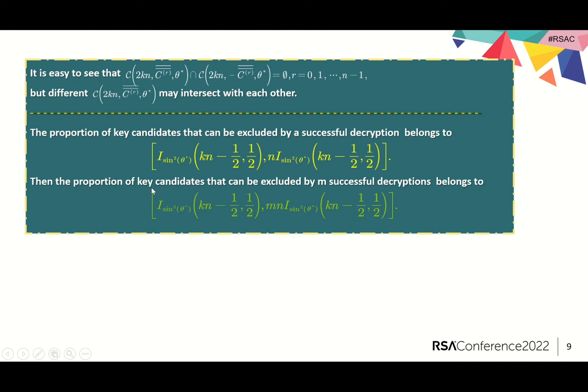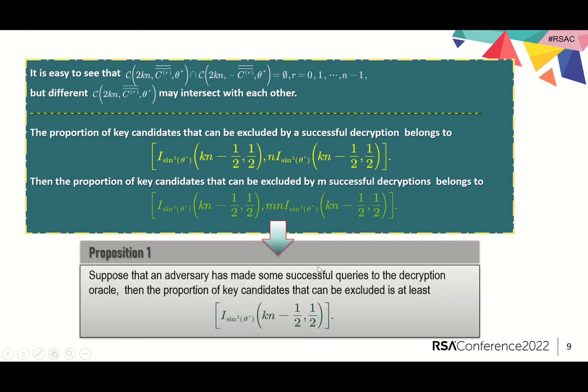And the proportion of key candidates that can be excluded by m successful decryptions belongs to this range. Due to the lack of the characterization of overlaps, the lower bound cannot be multiplied by m. Hence, a rough estimation is given in Proposition 1 of our paper. Suppose that an adversary has made some successful queries to the decryption oracle. Then the proportion of key candidates that can be excluded is at least this value.